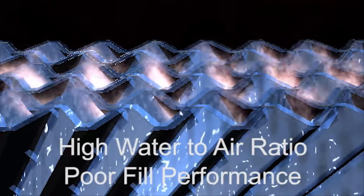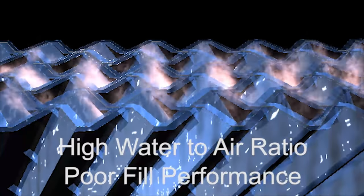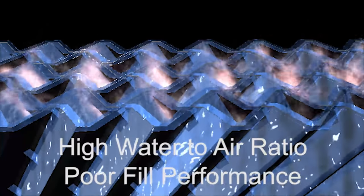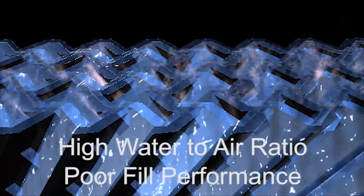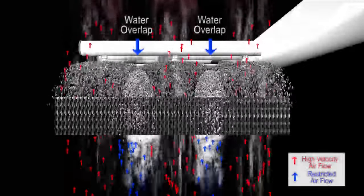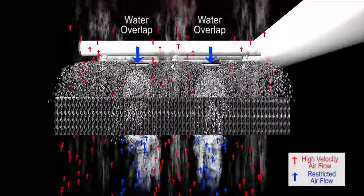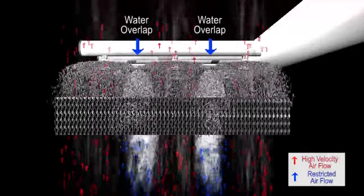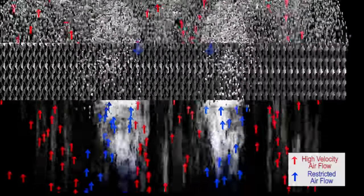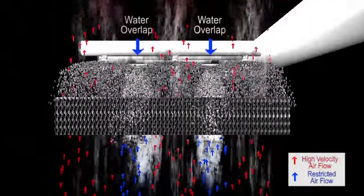Any deviation in this 1 to 3 ratio of air to water mixture will significantly degrade the performance of the cellular film media. So here is what happens when you overlap or flood the fill media. As you can see in the graphic, the water loading becomes heavy where the overlap occurs. This overlap creates a high-pressure drop, restricting airflow in these areas. The blue arrows depict the restriction to the airflow, resulting from the high-pressure drop and the heavy water loading of the overlap.